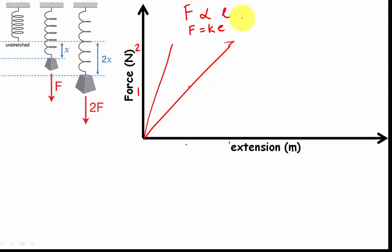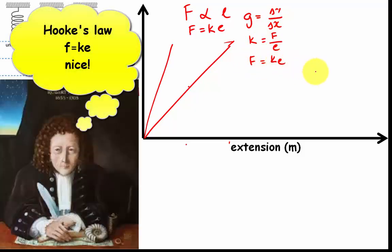The constant would be the gradient of the graph. Gradient is the change in the Y divided by the change in the X. The Y in this case is force. The X in this case is extension. And we're saying that that's going to be equal to the constant. So K will be equal to F over extension here, which is going to be an E. So that's actually Hooke's Law as well, which often gets written like this: F is equal to KE.